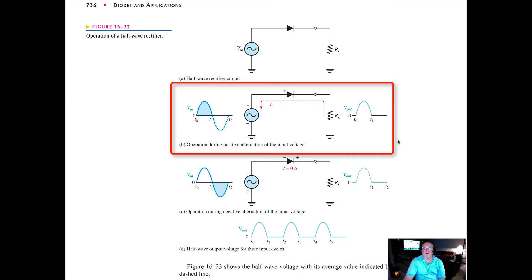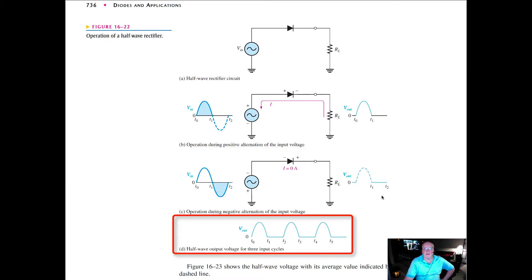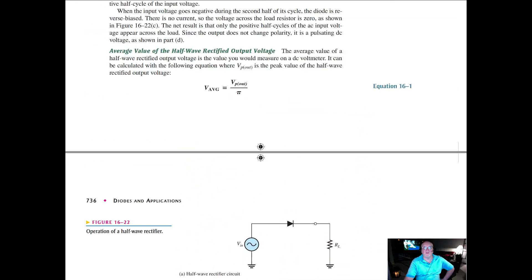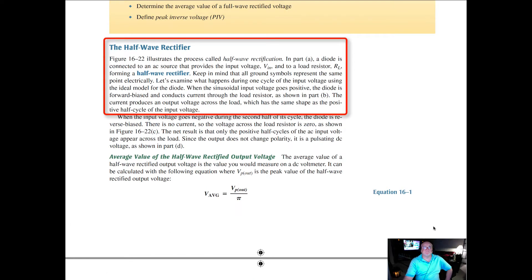That's part of the rectifier action or the action of the diode that does that. So you can see here during the negative alternation, there's nothing there. So you get this series of blips or pulses here by the action of the diode turning on and turning off.